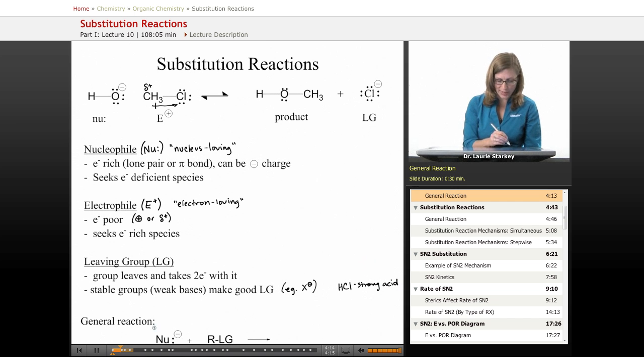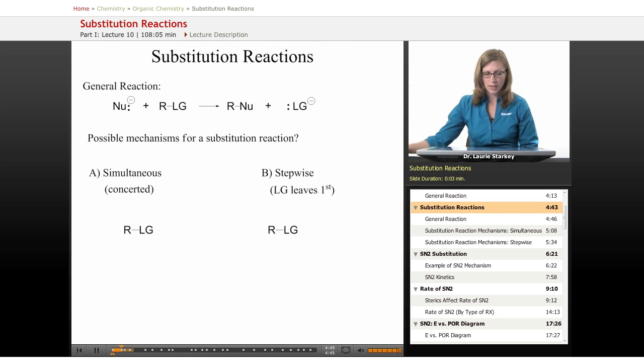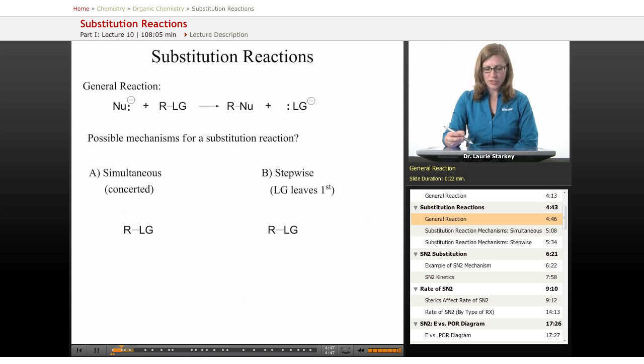Overall, the general reaction for the substitution reactions we're going to be studying in organic chemistry looks like this. There's some kind of nucleophile reacting with some kind of carbon chain. This R represents a carbon chain that has a leaving group on it. When the reaction is done, that R group is going to have a nucleophile bonded to it in place of the leaving group. The leaving group is going to now be on its own, typically with an extra lone pair and a negative charge.